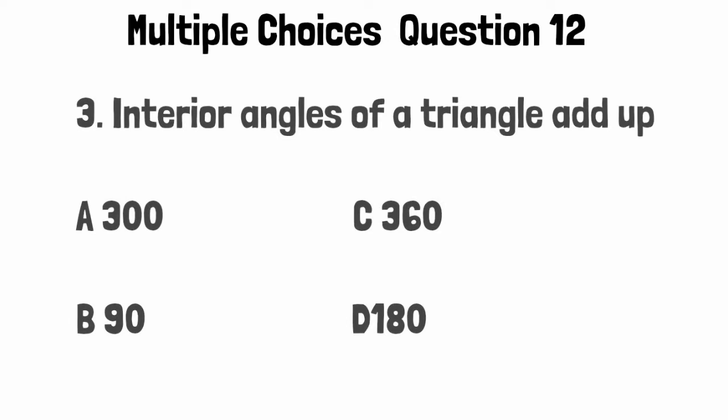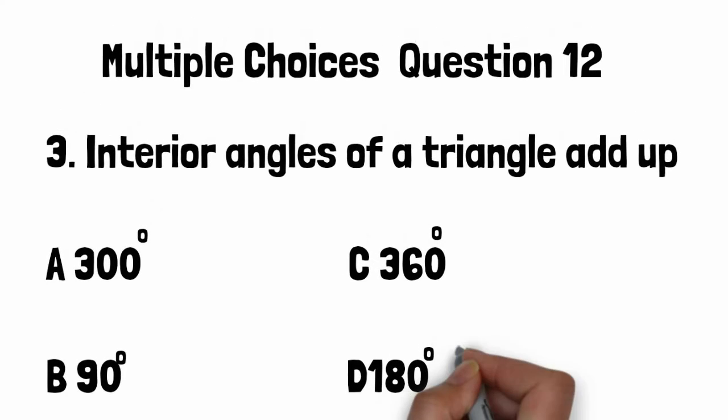When you sum the angles of a triangle, the sum of all three angles equals 180 degrees. All angles of a triangle add up to 180 degrees. So D is the right option. Interior angles of a triangle equal 180 degrees.